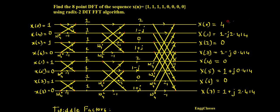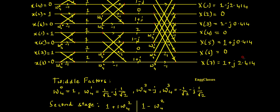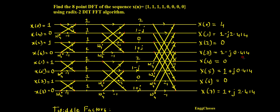So this is finally the 8-point DFT: X[0]=4, X[1]=1−j2.414, X[2]=0, X[3]=1−j0.414, X[4]=0, X[5]=1+j0.414, X[6]=0, X[7]=1+j2.414. I have explained everything step by step. I hope you have understood. If there are any doubts, please let me know in the comment section. Thank you so much for watching.